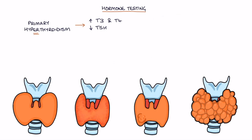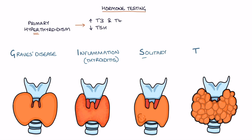The top causes of primary hyperthyroidism can be remembered with the GIST mnemonic: G for Graves' disease, I for inflammation or thyroiditis, S for solitary toxic thyroid nodule, and T for toxic multinodular goitre.